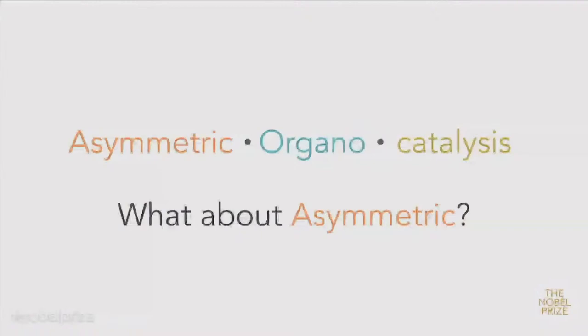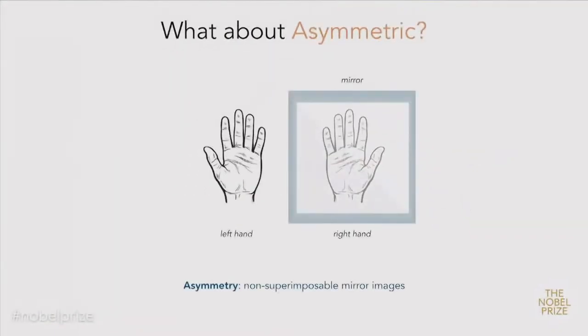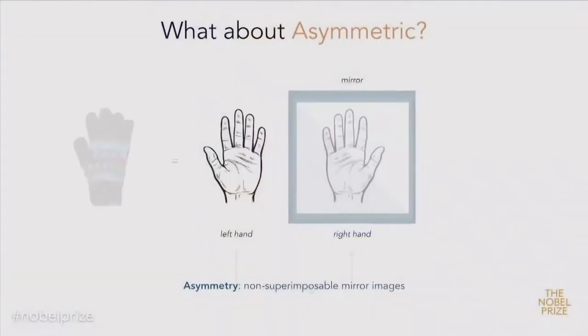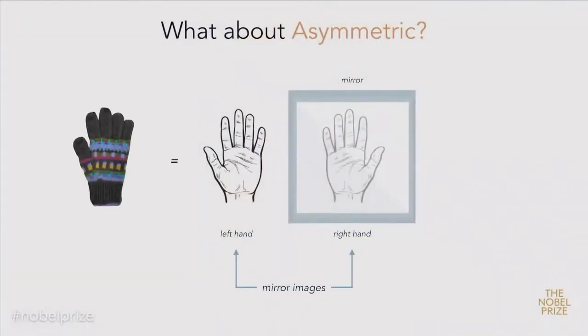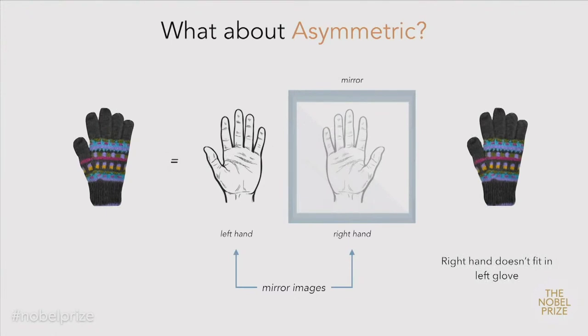The next part is: what does asymmetric mean? It's actually pretty easy to describe to non-chemists, because most people on Earth have two hands or two feet. If you look at your two hands, they're in fact mirror images of each other — similar, but still different. They're different because they're not superimposable, which makes them asymmetric. For example, if you were to take a left-hand glove, you know it fits on your left hand. But if you take that same glove and try to put it on your right hand, your right hand will not recognize that glove. It simply doesn't fit. That's what you call being asymmetric.